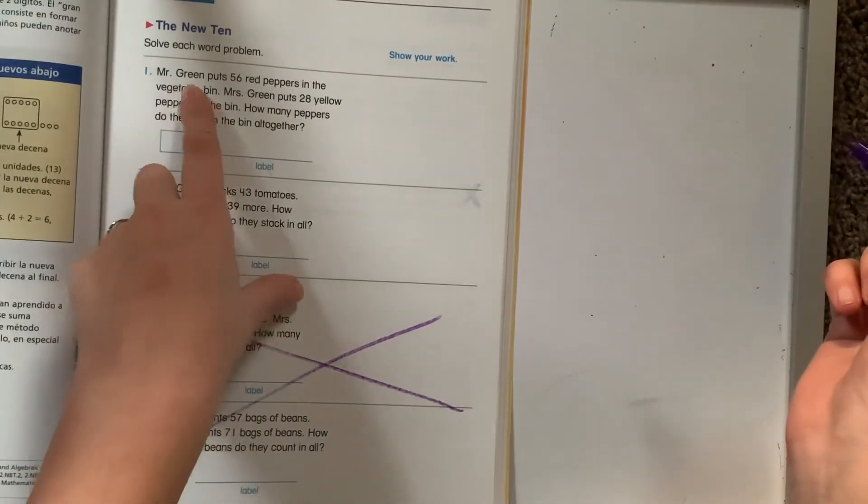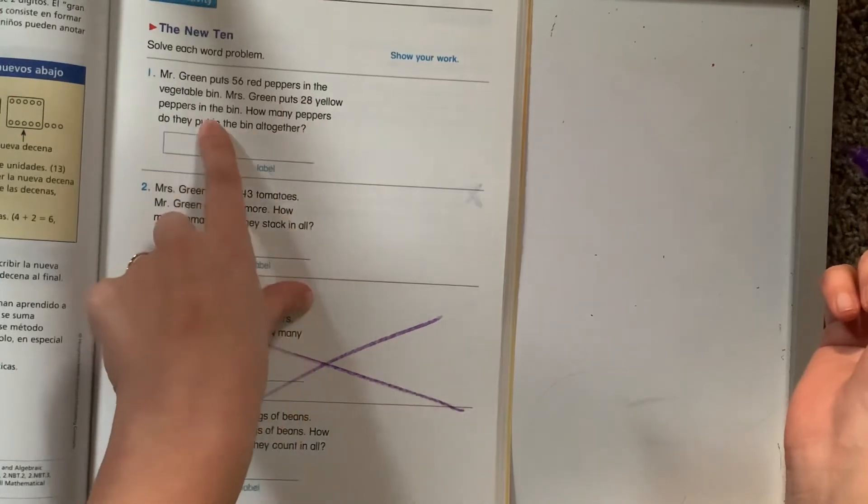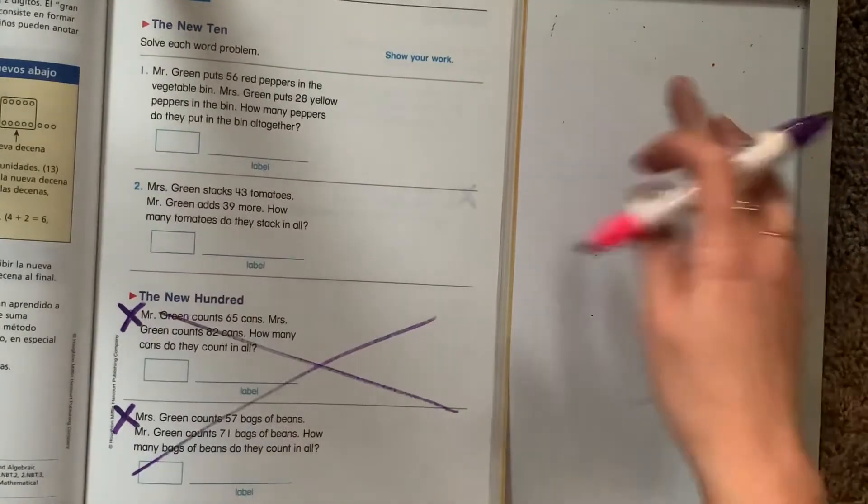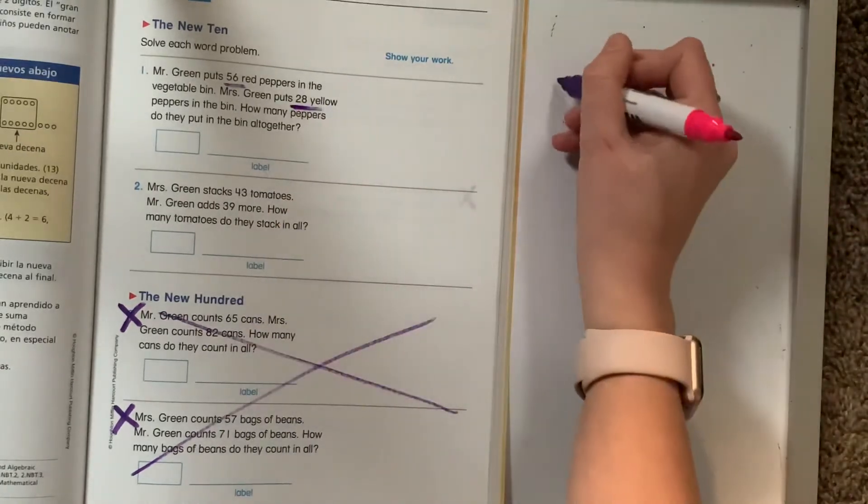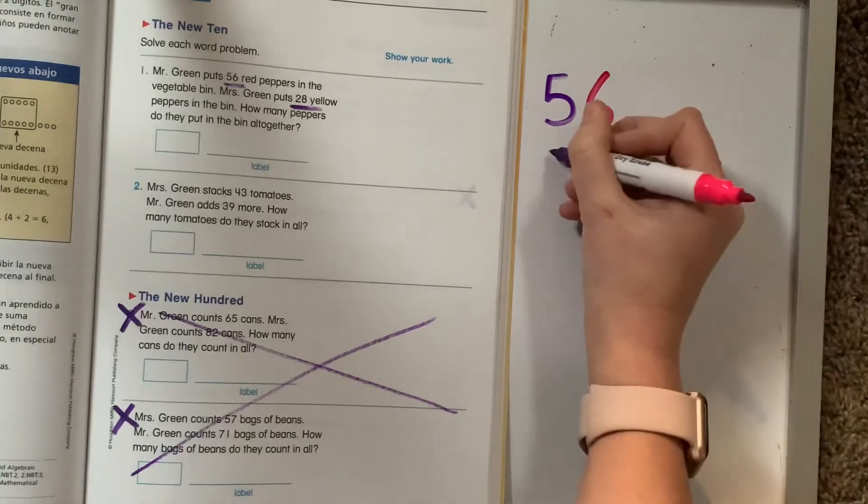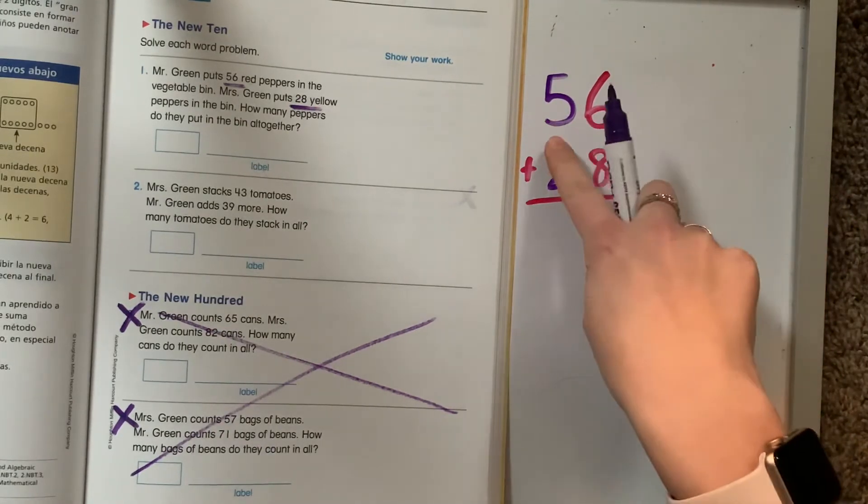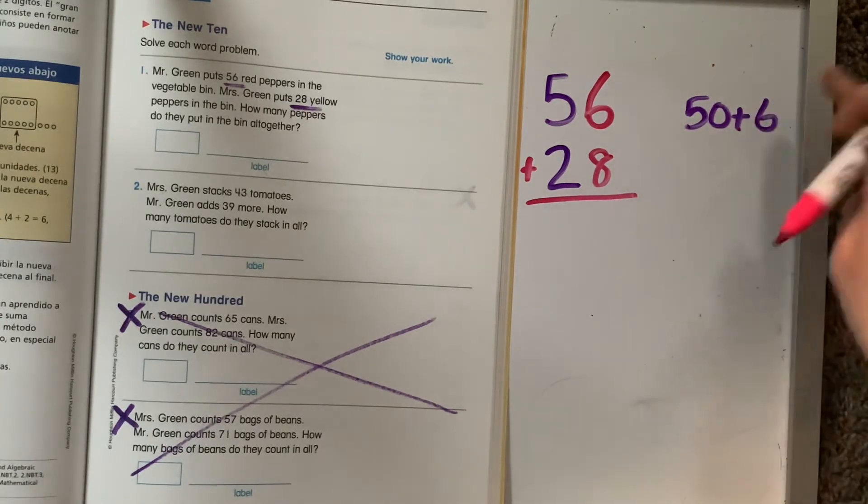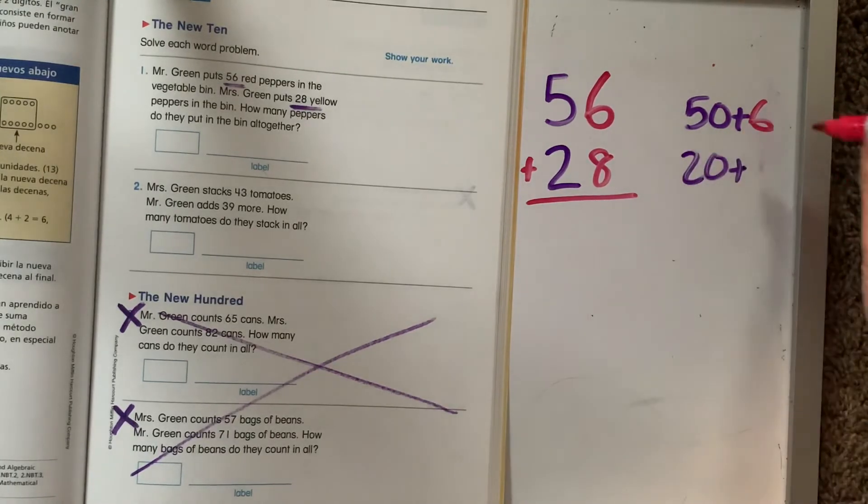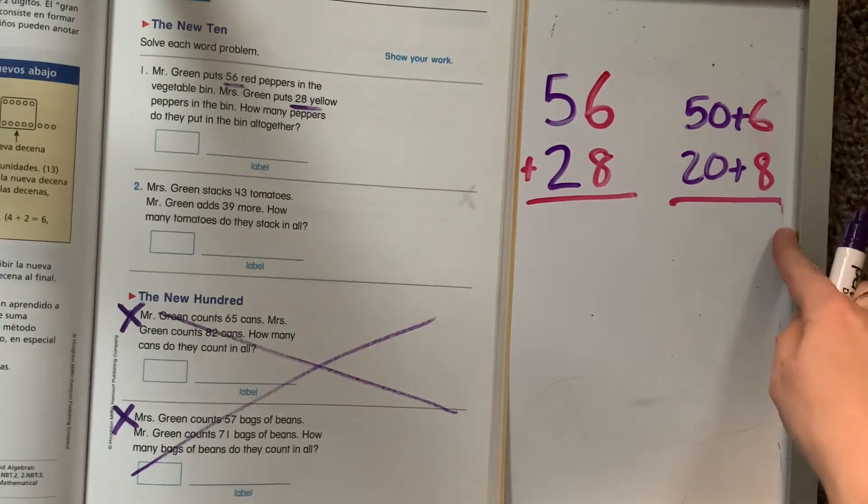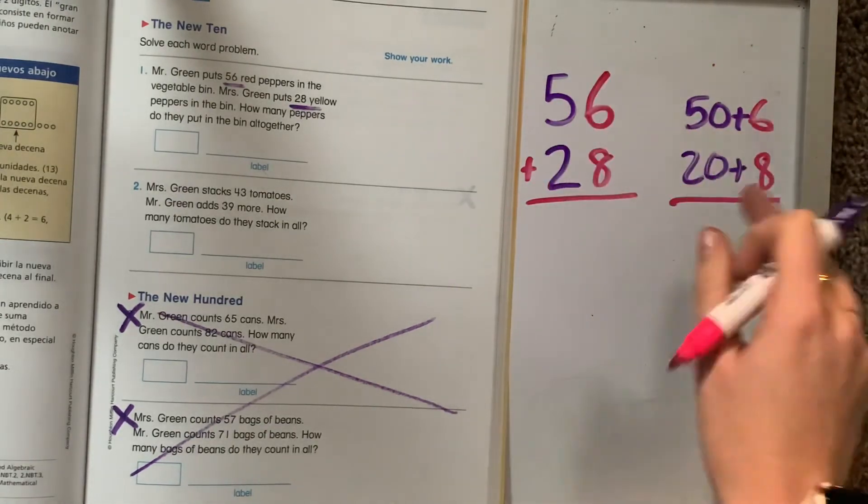So for this first one, it says, Mr. Green puts 56 peppers in the vegetable bin. Mrs. Green puts 28 yellow peppers in the bin. How many peppers did they put in all together? Now I'm going to write the equation for that over here. So Mr. Green started with 56 and then he added 28. So we need to think about the expanded form for this number. 50 plus 6. And 28. 20 plus 8. And then my job is that I need to solve this before I can solve this. Because the answer to this is going to help me figure out the answer to that problem.